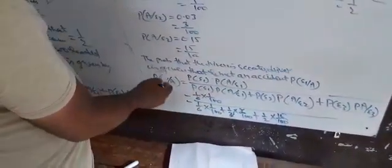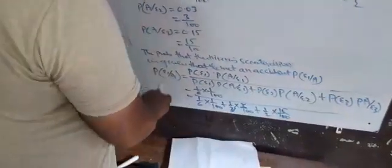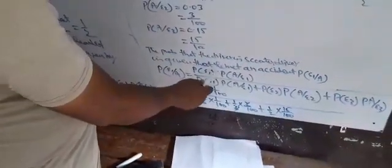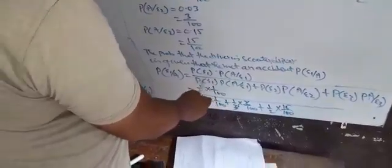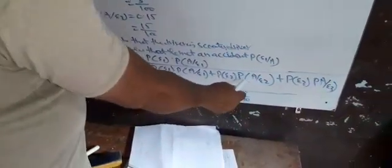The probability that the driver is a scooter driver given that they met an accident is P(E1|A) = [P(E1) × P(A|E1)] / [P(E1) × P(A|E1) + P(E2) × P(A|E2) + P(E3) × P(A|E3)].